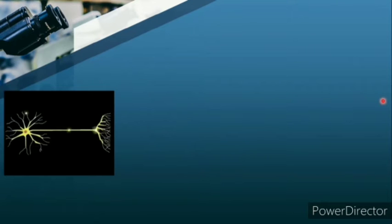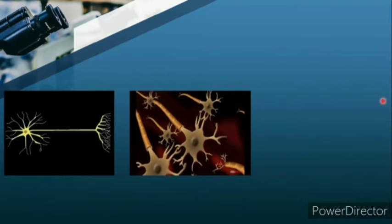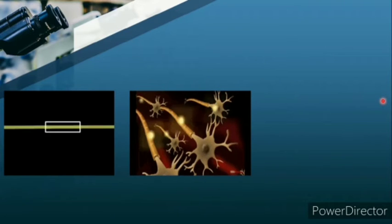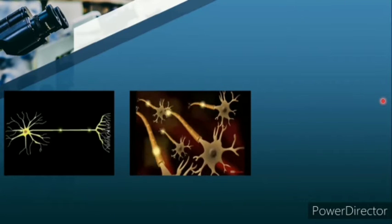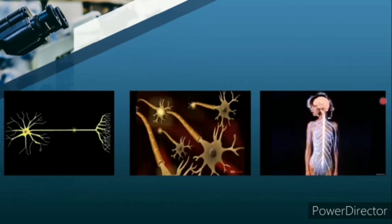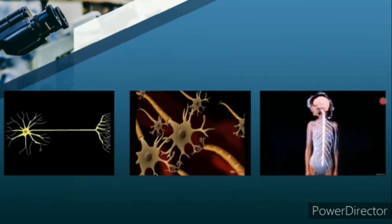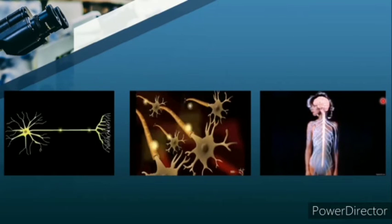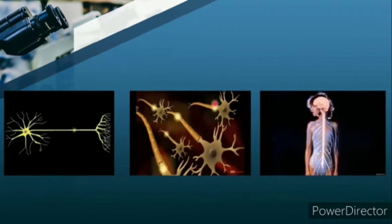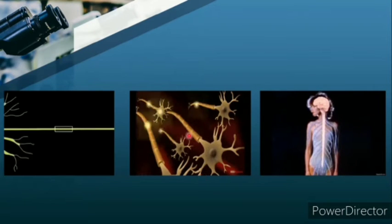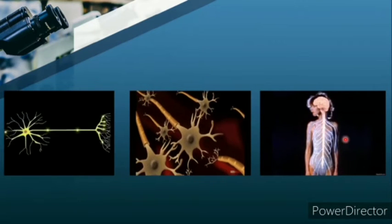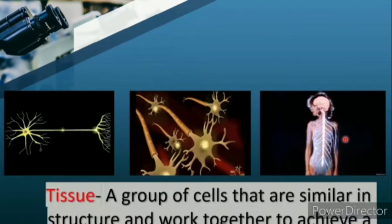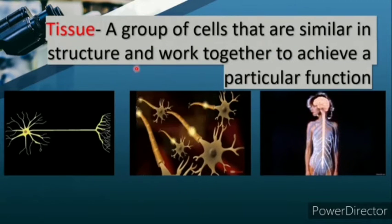Here you can see the cell of a neuron - it's a single cell. When all these neurons combine or come together, they perform the specific function of transferring information based on external stimuli. All these neurons are of similar structure, performing a particular function.